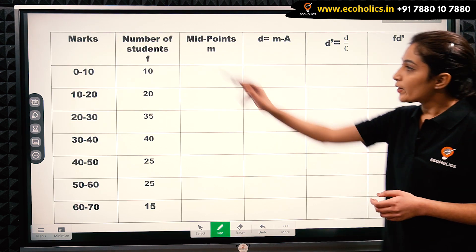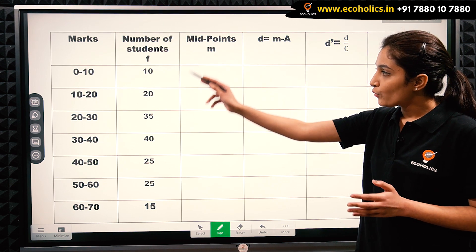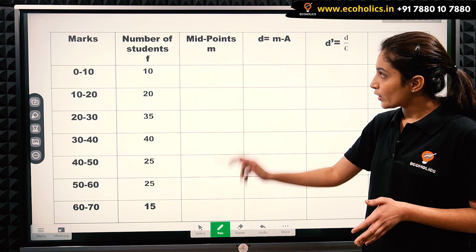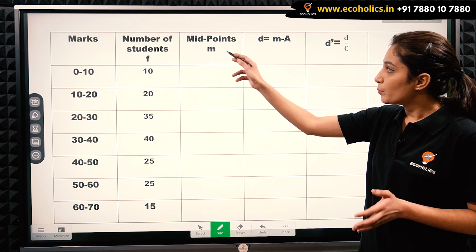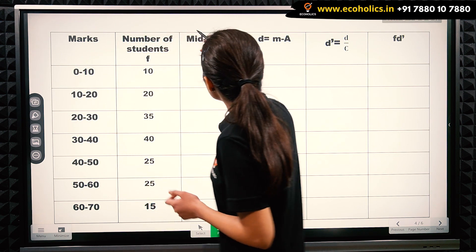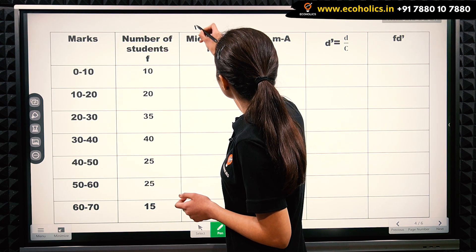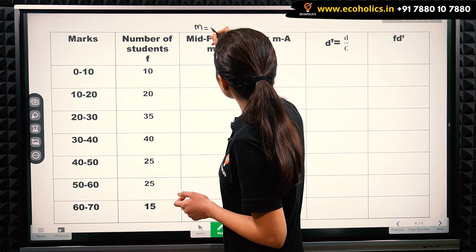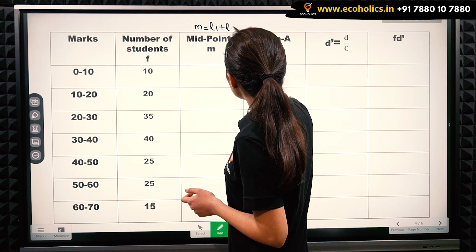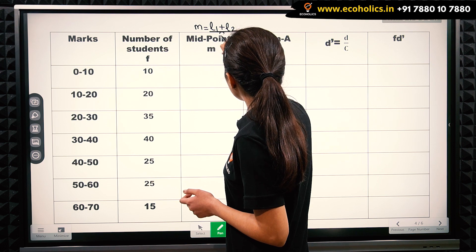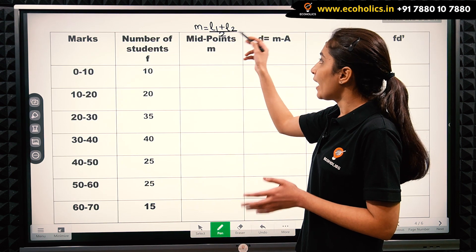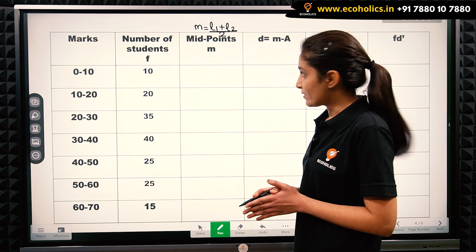We have marks of students given in the form of class intervals and number of students representing our frequency, and we will be calculating midpoints now. The formula for calculating midpoint is M = (L1 + L2) / 2, where L1 is our lower limit of the class interval and L2 is the upper limit of the class interval.